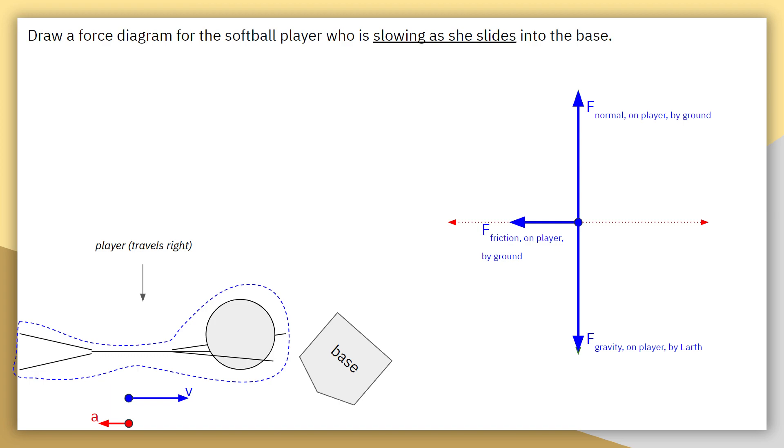Now the player is moving to the right. We may be tempted to include a force pointing in the direction of motion. However, if we wanted to do so, we would need to explain what two objects, the player and what else, is causing that rightward force.